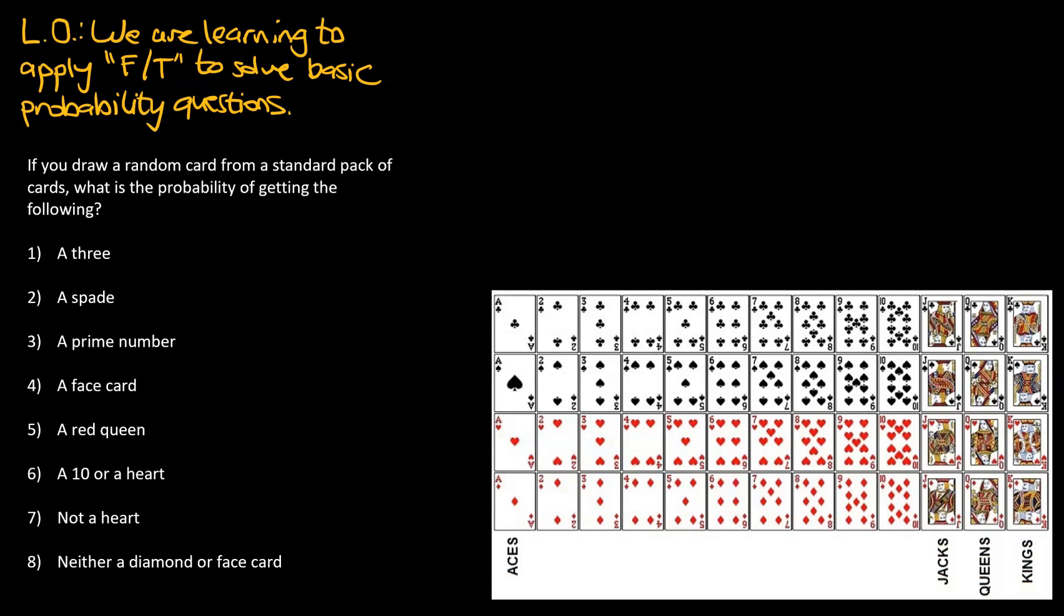Hey guys, Mr. Bowman here. Today's learning objective is in yellow, and we're learning to apply the F over T approach to solve basic probabilities. So I've circled F over T because that's the key thing that we're going to be learning from today's video.